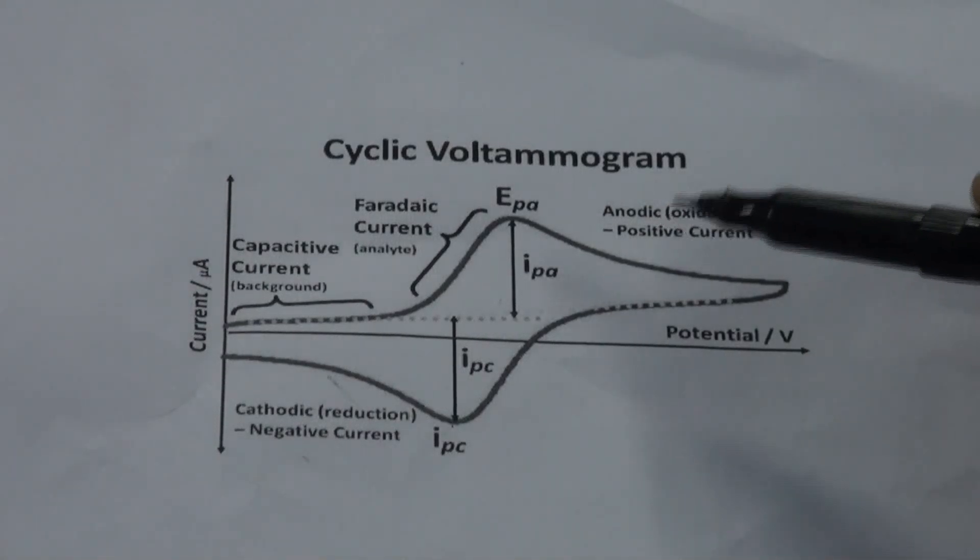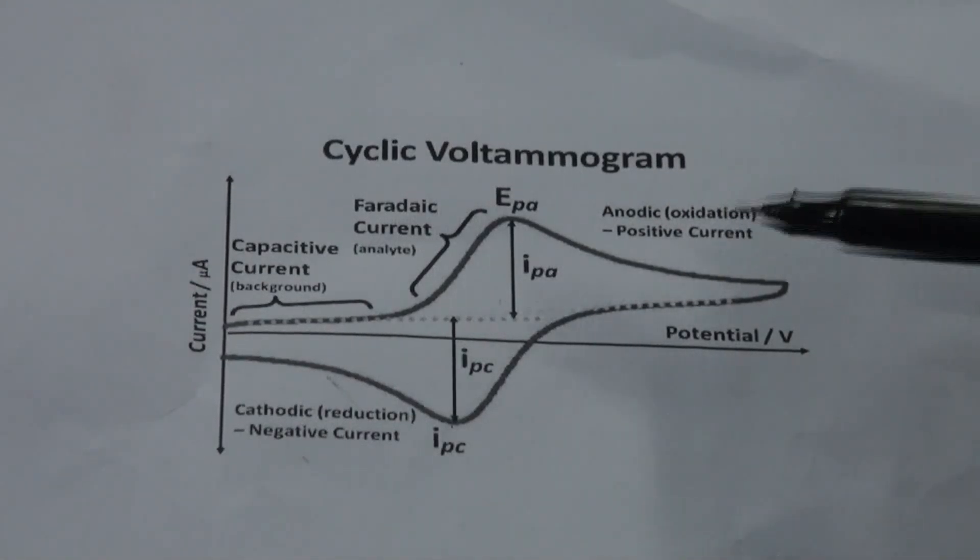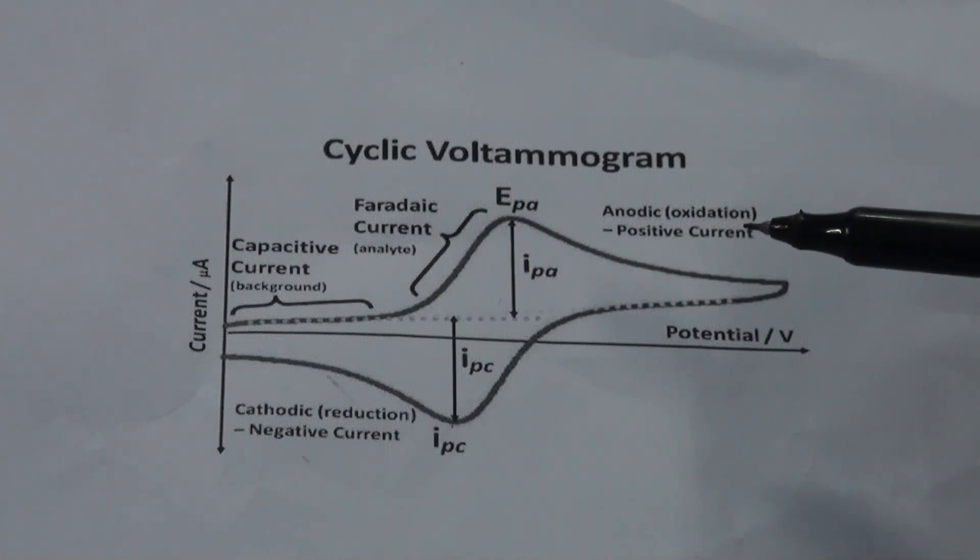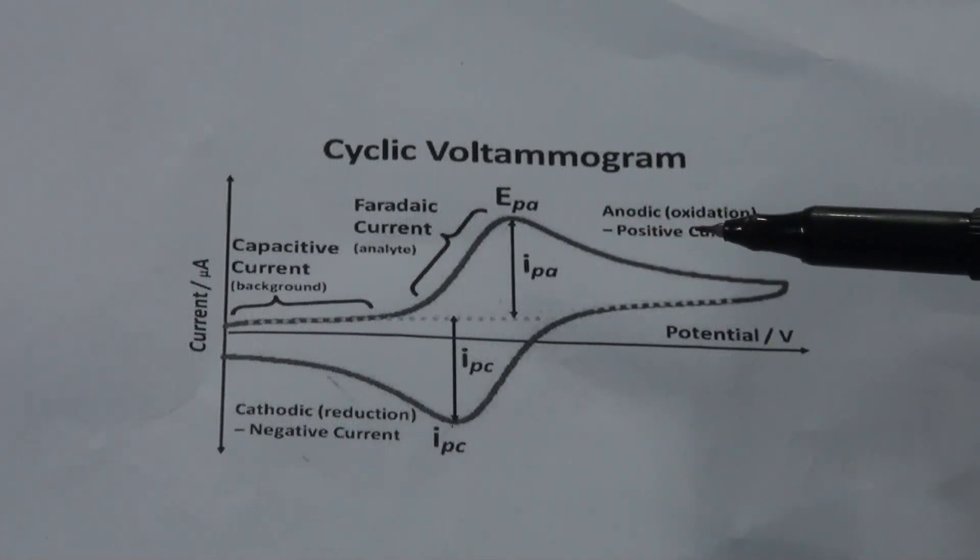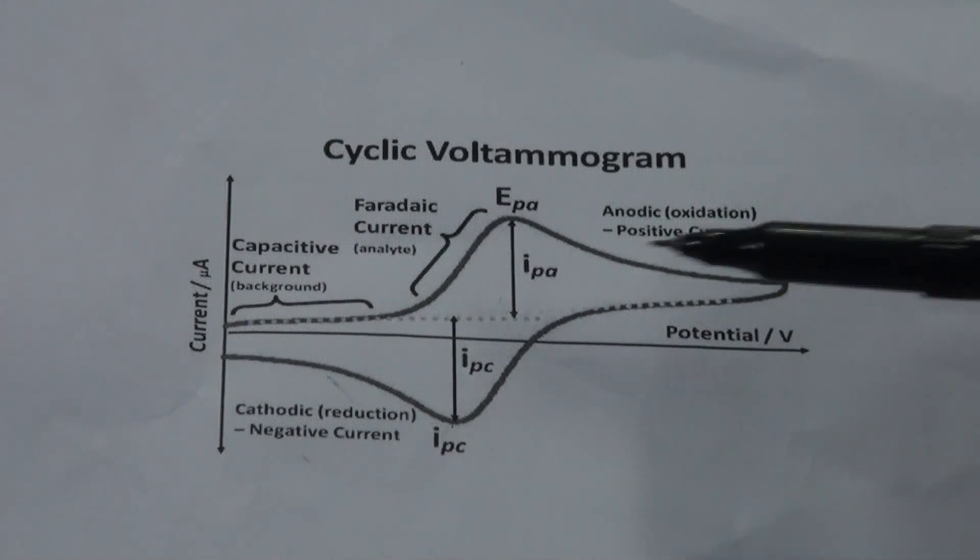Cyclic voltammetry is a potential dynamic electrochemical measurement technique. In this cyclic voltammetry, the working electrode potential is ramped linearly with time.